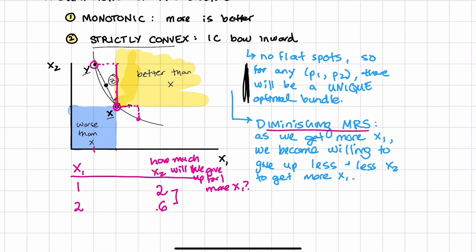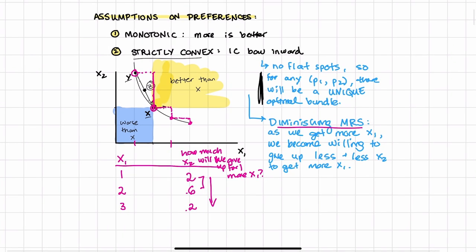Because we want mixtures. And then with three units of x1, how much are we, how much x2 are we now willing to give up to get one x1? Here's us getting one x1. Now we're willing to give up like 0.2 x2 or something like that. So as we get more x1, become less willing to give up x2 to get more. All right, so hopefully that made it clear. Let's see. Now we can see.